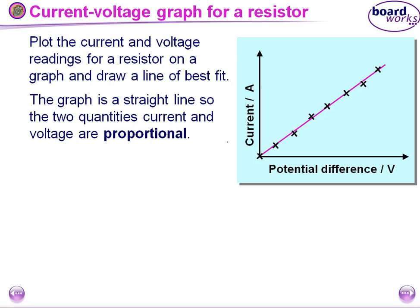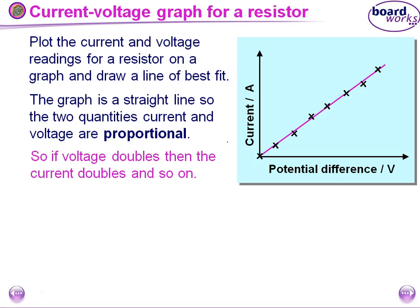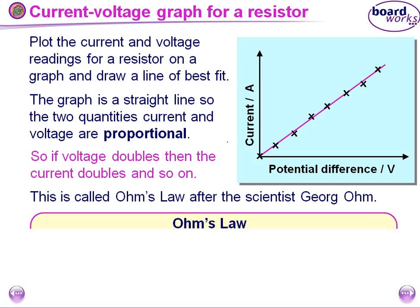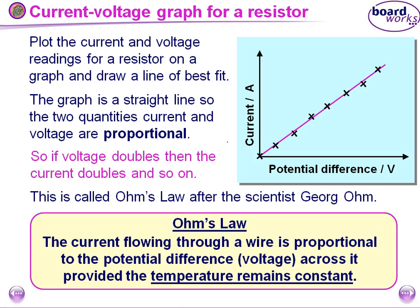This graph is a straight line, so we see both voltage and current are proportional. This is Ohm's Law. The current flowing through the wire is directly proportional to the potential difference across it, provided the physical conditions remain constant — temperature, pressure, density, everything.